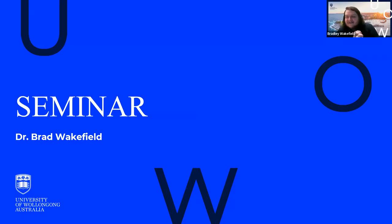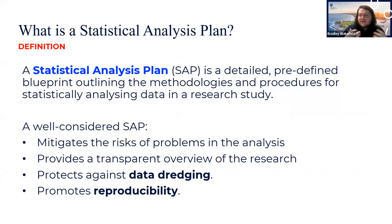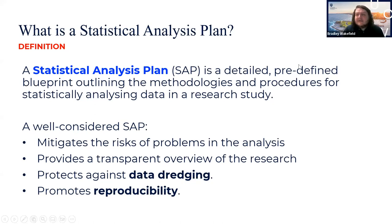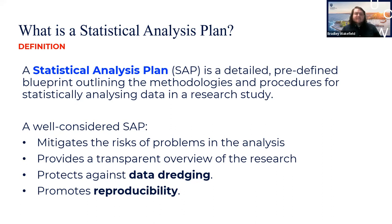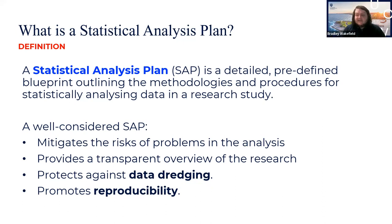Today we're here to talk about statistical analysis plans and research data management. As a mathematician and statistician, I always start with a definition: a statistical analysis plan, or SAP, is a detailed, predefined blueprint outlining the methodologies and procedures for statistically analyzing data in a research study. Basically, it's a plan you establish at the start of your research project, laying out the steps you'll take to meet your research objectives and analyze the data you'll collect.